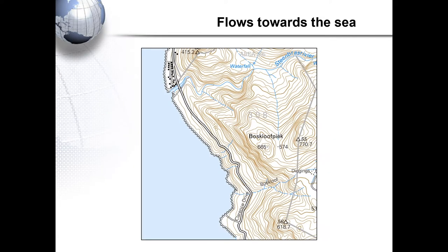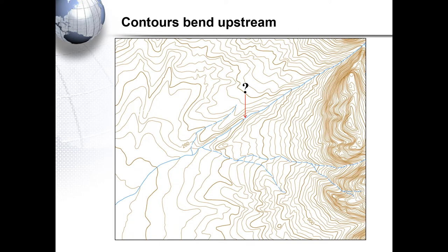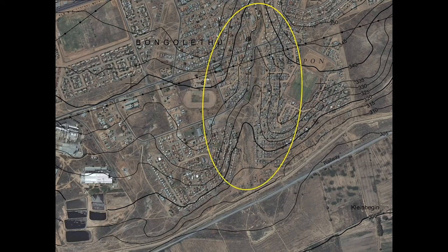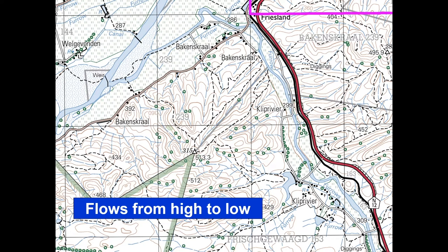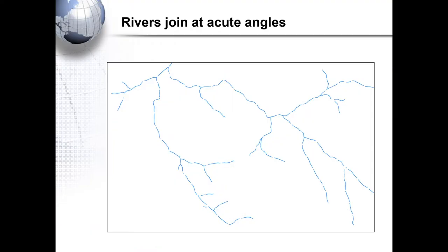Let's have a look at this river — the river flows towards the sea. Our contours bend upstream. Here is another example of contours bending upstream — the river flowing from high to low. There you have your spot heights of 309 meters, 299 and 286.